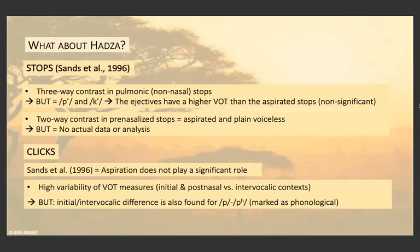What about Hatsa? What can we say about the contrast? As for stops, there is a three-way contrast in pulmonic, that is non-nasal stops. However, the ejectives were not taken into consideration, and it just said that these have higher voice-onset time measures than de-aspirated stops, although it's classified as non-significant. For the pre-nasalized stops, there is a two-way contrast, but it does not follow the typologically expected rules — we find an aspirated and a plain voiceless set, but in that article there is no data or analysis I can further explain.